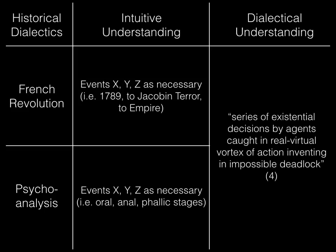According to Hegelian dialectical thought, this linear temporal narrative is not the real of the in-itself of the absolute. In the real, we can only construct such a narrative retroactively—after the fact. What we actually get in the real is simply a "series of existential decisions by agents who caught up in a whirlwind of action had to invent their way out of the deadlock." When thinking about Donald Trump, global warming, gender and sexual difference, or global capitalism, we cannot know the future. We can only be sure that we will retroactively have a story to tell about how we invented our way out of the deadlock.